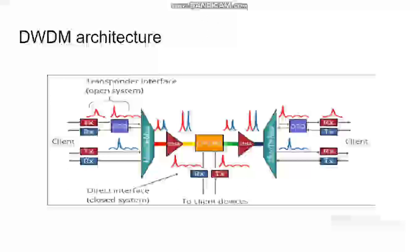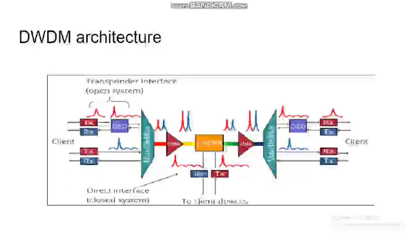From the transporter, different wavelength signals are transmitted. Multiplexers combine these signals and send them to optical fibers. Here we use OADM — Optical Add-Drop Multiplexer — which adds or drops wavelengths as per requirement.